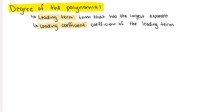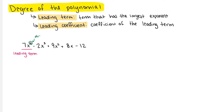Let's look at a polynomial: 7x to the 4th minus 2x to the 3rd plus 9x squared plus 8x minus 12. The term with the largest exponent is our leading term, so in this example, 7x to the 4th is our leading term. That means the degree of our polynomial is 4, and our leading coefficient is 7.